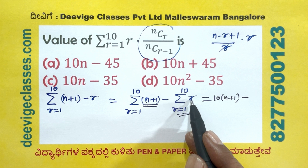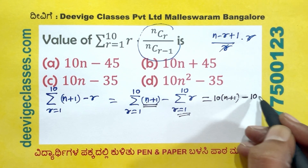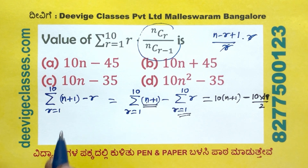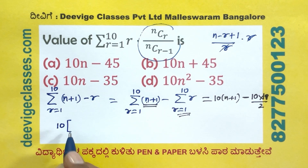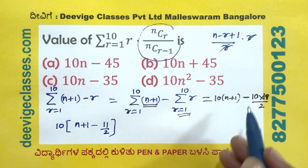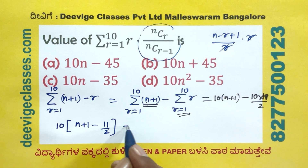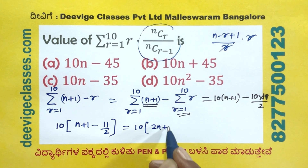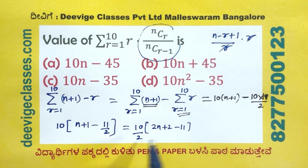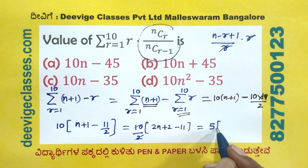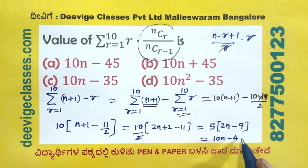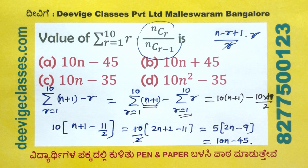This is the sum of first 10 natural numbers: 1, 2, 3, ..., 10. That is 10 into 11 by 2. So the expression is 10 times n plus 1 minus 10 into 11 by 2, which equals 10 times 2n plus 2 minus 11 divided by 2, giving 2n minus 9. So the answer is 5 times 2n minus 9, which equals 10n minus 45.